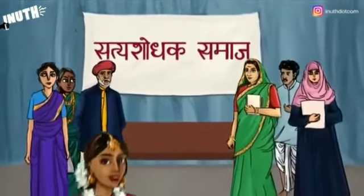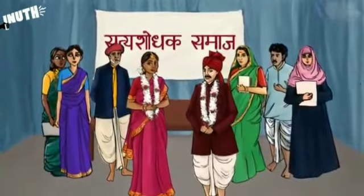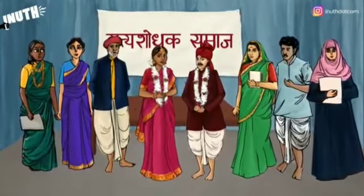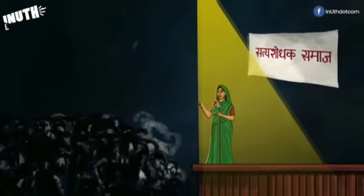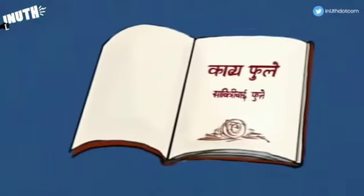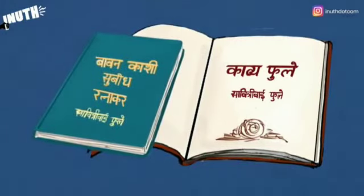Satya Shodhak inter-caste marriages challenged the existing status quo and Savitri Bhai Phule stood undaunted for the rights of those persecuted by the caste system. After Jyotiba's death, Savitri Bhai went on to head the organization. A crusader for education and empowerment through and through, Savitri Bhai wrote feisty prose and poetry, inspiring the oppressed to rise up against the ruling classes. She published Kavya Phule in 1854 and Bhavan Kashi Subodh Ratnakar in 1892.